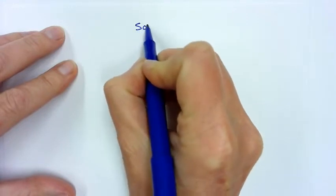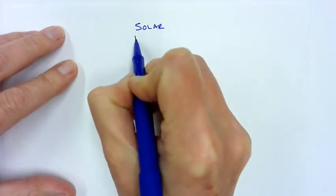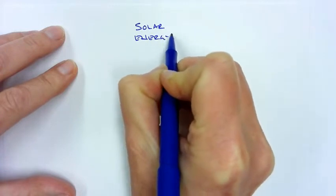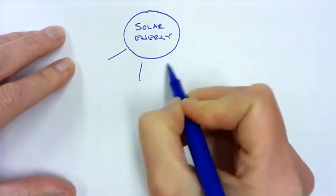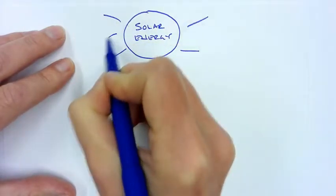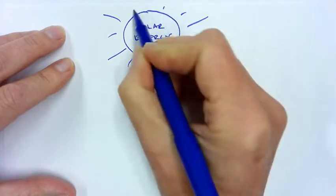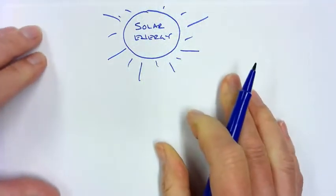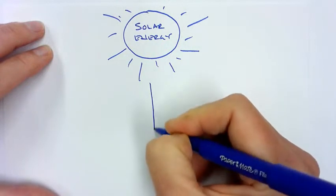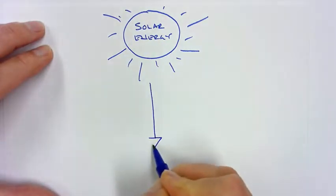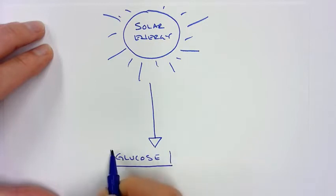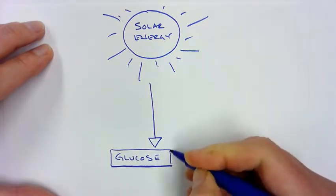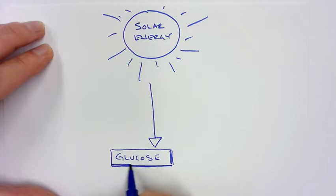First we're going to start with solar energy that comes from the Sun. Sunlight emits photons and these are converted. The first step is to create glucose. Glucose is just an example of a type of sugar that can be converted—there's lots of different types, but we're just going to be working with glucose for this example.